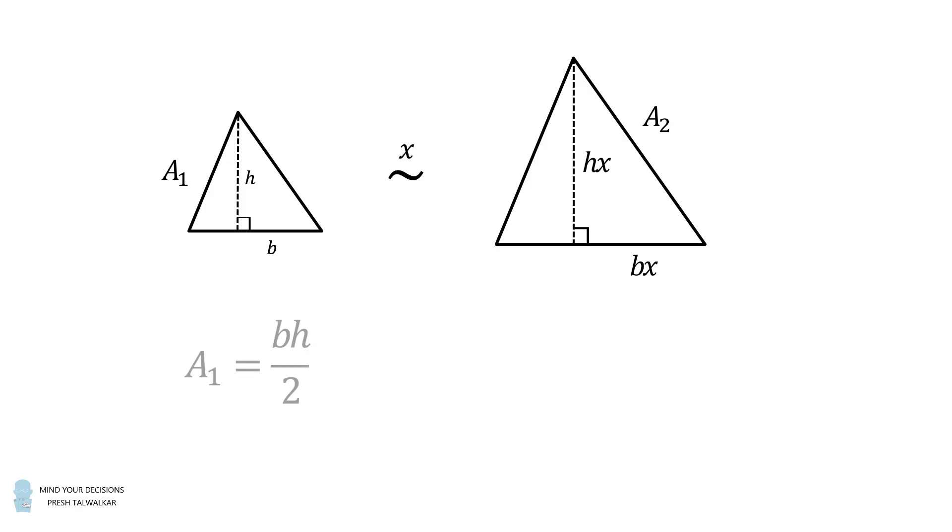The first triangle has an area that's equal to its base times its height all over 2. The second triangle also has an area that's equal to its base times its height over 2. But this time, the base and the height are both scaled by x. Therefore, these multiply together to be x squared. So the area of the second triangle is exactly equal to the area of the first triangle multiplied by x squared.